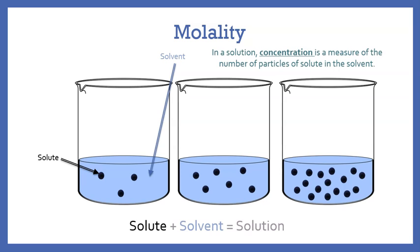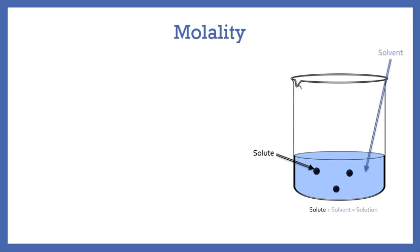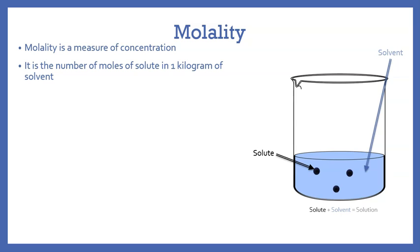Saying something is concentrated or dilute is not very precise, so we have ways to get an exact measure of the concentration. One way is molality. We can actually give it a definition: molality is a measure of concentration. In fact, it is the number of moles of solute in one kilogram of solvent.